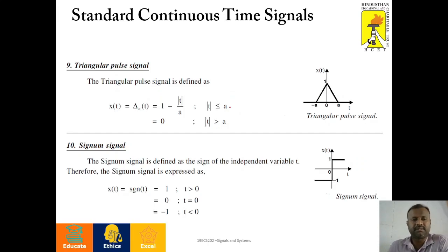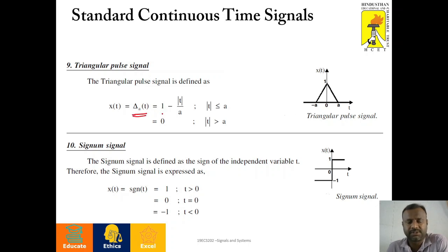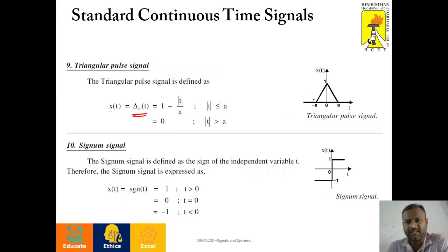The ninth signal is the triangular pulse. The triangular pulse in general is represented as delta-A of t equals 1 minus the absolute value of t divided by A, where A represents the width of this triangular pulse.